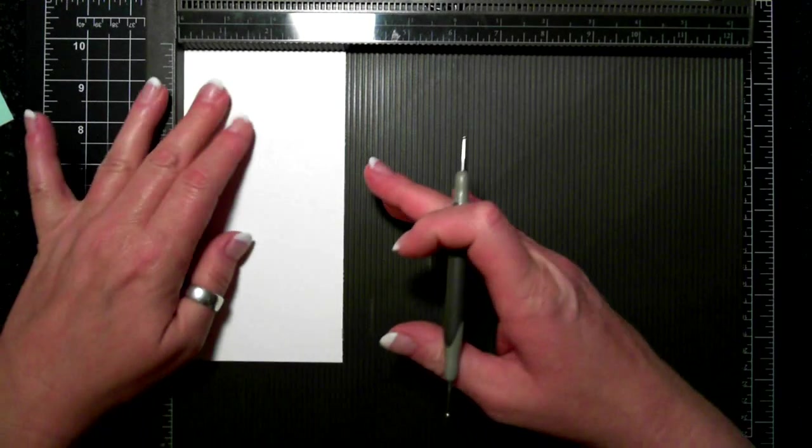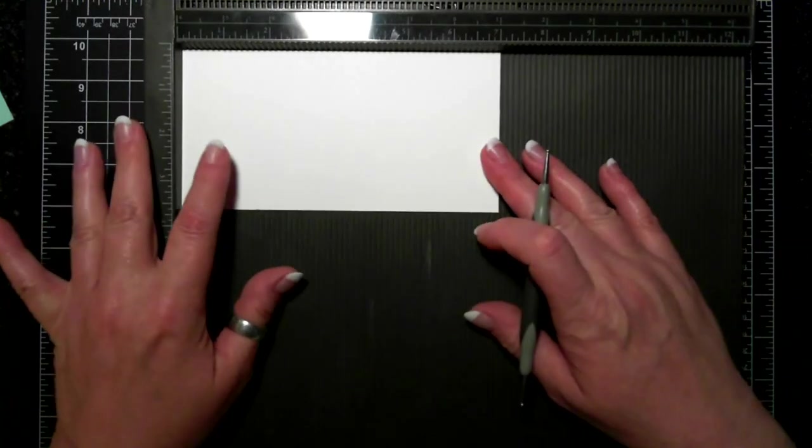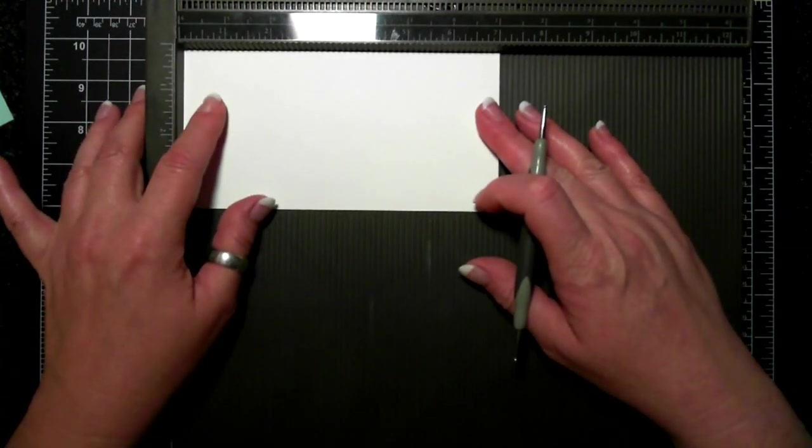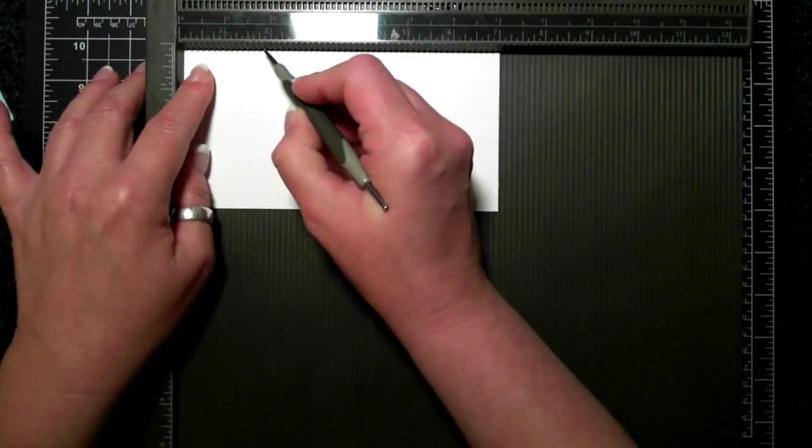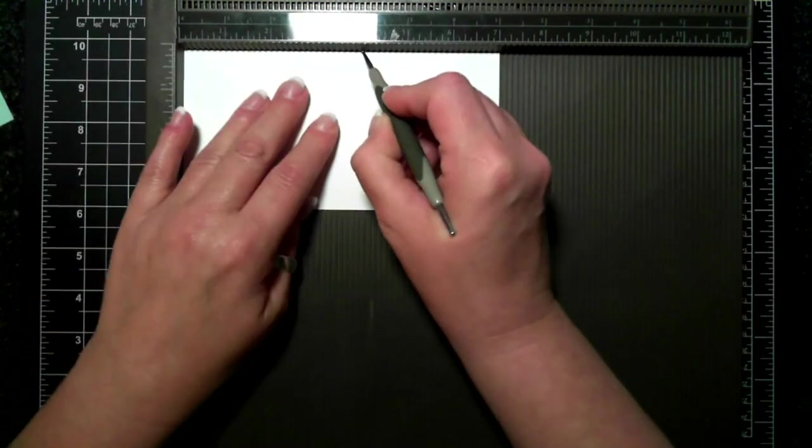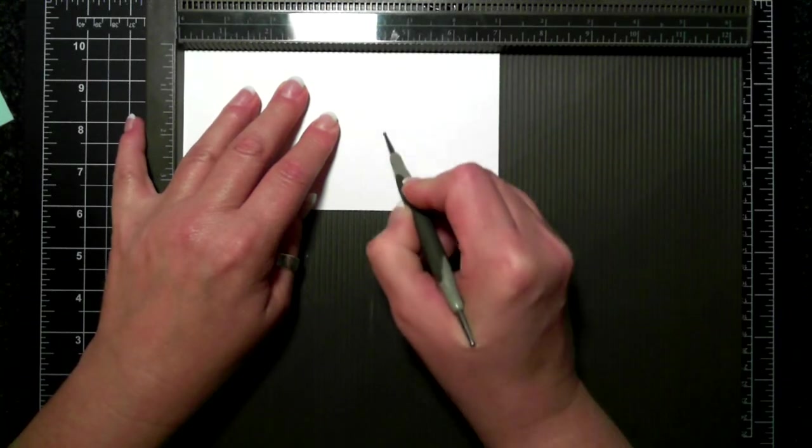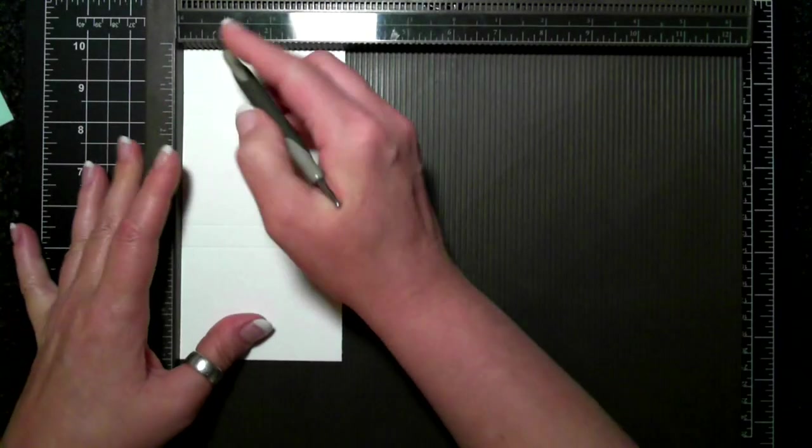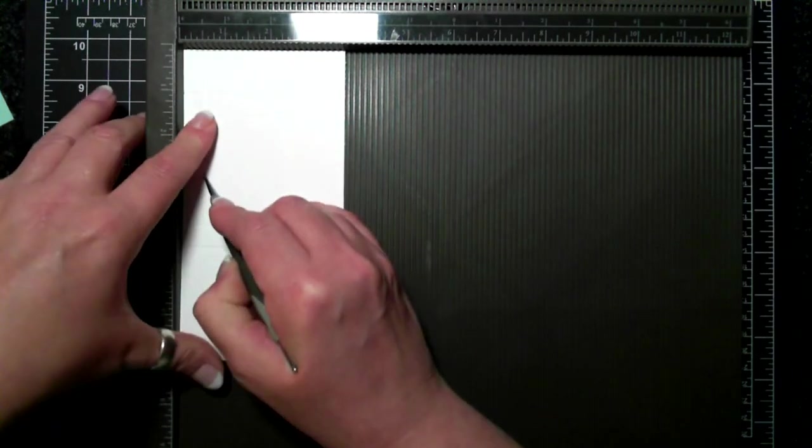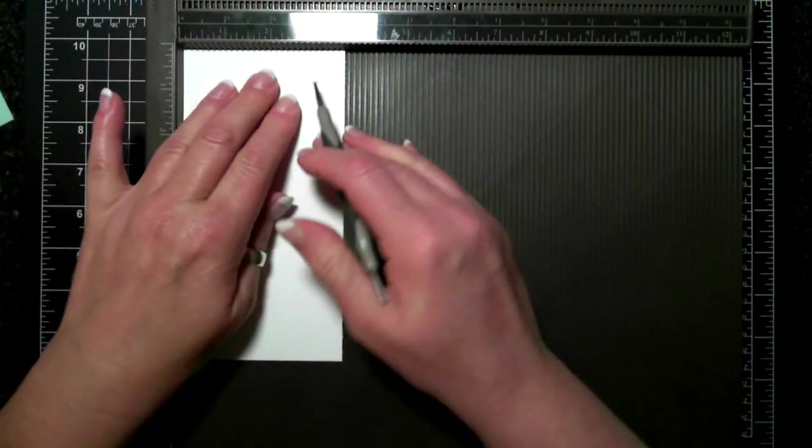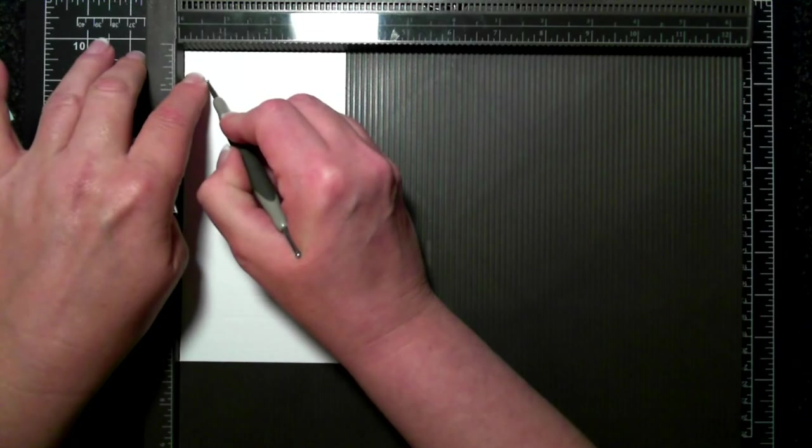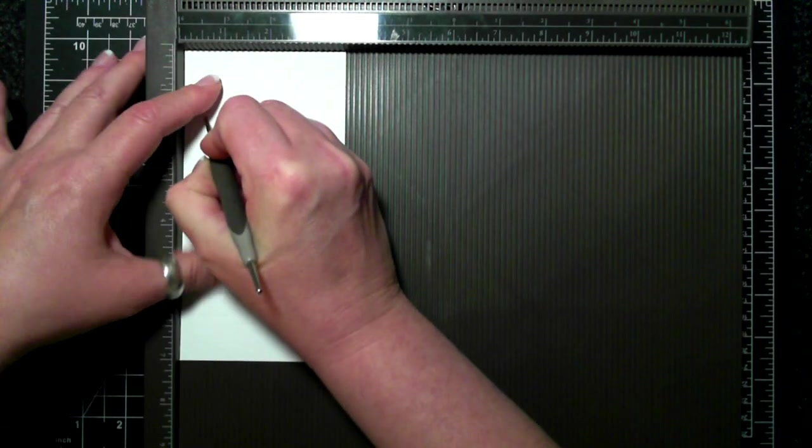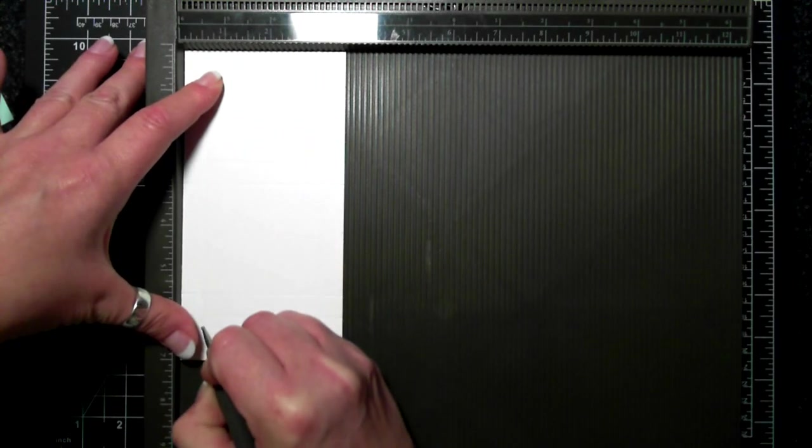The outer pocket is seven and one sixteenth by three and five eighths. On the long side I'm going to score at one inch, one and a half, four, and four and a half. Then a half an inch on this side, and I'm just going to turn around.